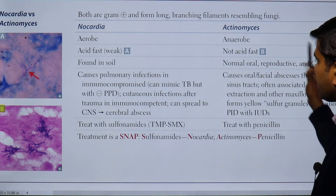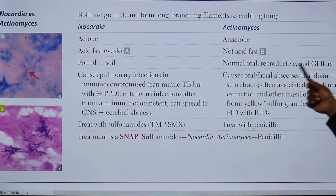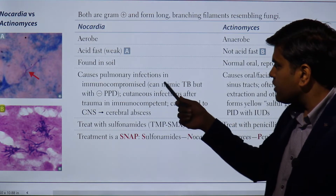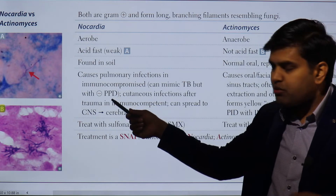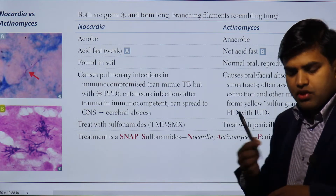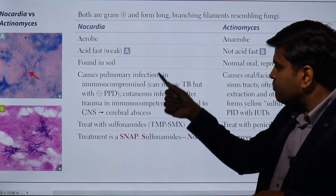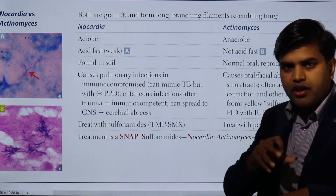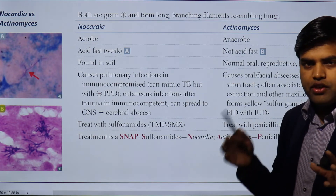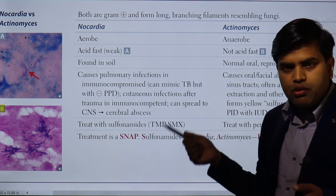Nocardia is acid-fast whereas Actinomyces is not. They are found in soil but Actinomyces is also normal flora of the oral, reproductive, and GI tract. Nocardia can cause pulmonary infection in immunocompromised patients that can mimic tuberculosis, but the tuberculin skin test (PPD — purified protein derivative) will be negative. The patient will have clinical features resembling tuberculosis, but skin testing will be negative because it is actually a nocardial infection.